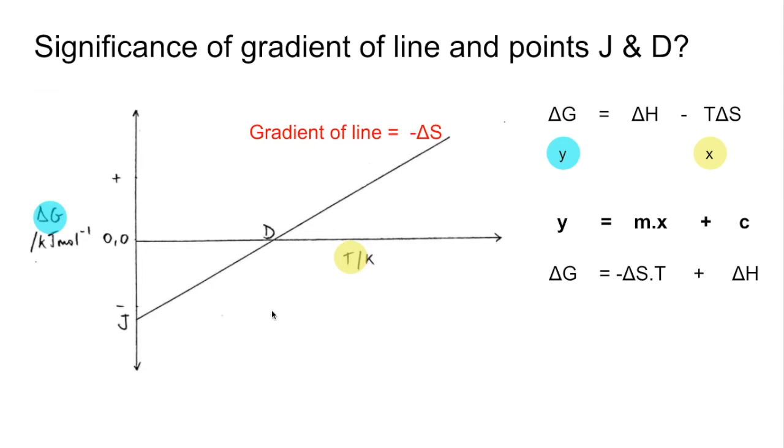J is the y-intercept. You see the graph is cutting the y-axis there, and so therefore J must be delta H.